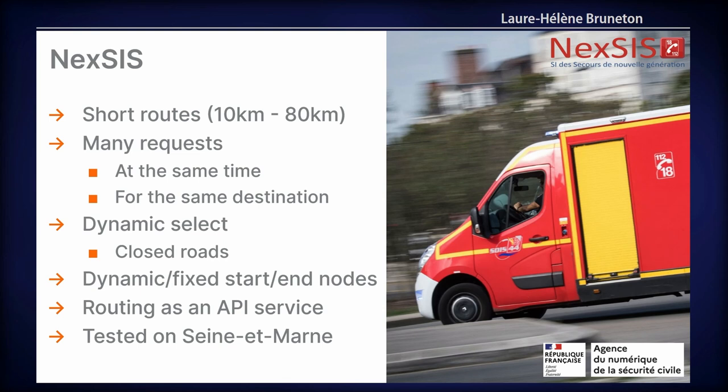We wanted to be as flexible as possible, which is why we chose PG Routing instead of other routing engines. We want to acknowledge closed roads due to floods or anything that could change the graph at query time. We have dynamic start and end points, we offer the service as an API without writing procedures in the database. We have an OGC API which sends prepared queries. For now this project has only been tested on Seine-et-Marne, a small part of France.